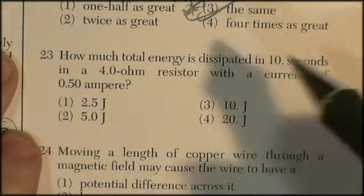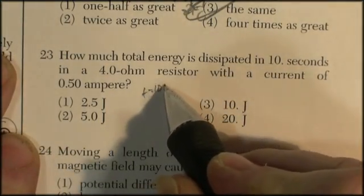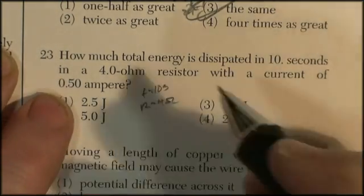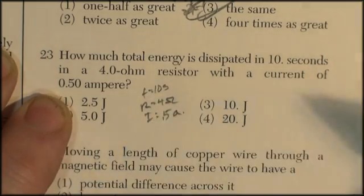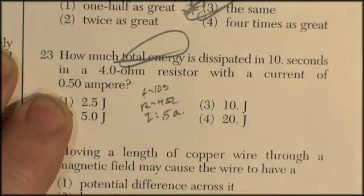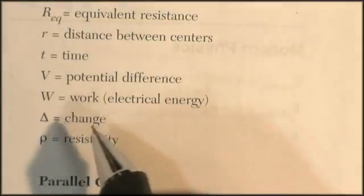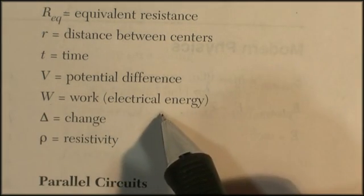Question 23. How much total energy has dissipated in 10 seconds? Time is 10 seconds. In a 4-ohm resistor, resistance is 4 ohms, with a current of half an amp. Five amps. So they want total energy. If I go find my equations, over on the side where it lists the knowns, it says W is work, but it's electrical energy. It's the total amount of work you do. Electrical energy is work.